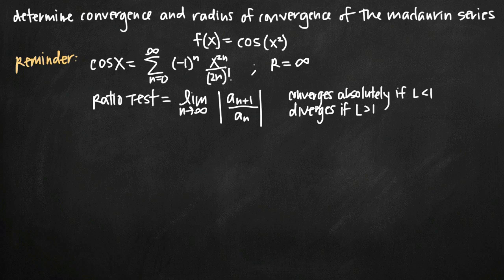Whenever you're dealing with a Maclaurin series and trying to find whether it converges or find its radius of convergence, it's really helpful to decide whether your Maclaurin series is similar to some well-known Maclaurin series. In our case, cosine of x is a well-known Maclaurin series, and we've been given its sum here. Our function, cosine of x squared, is very similar to cosine of x, except that in place of x, we substitute x squared.